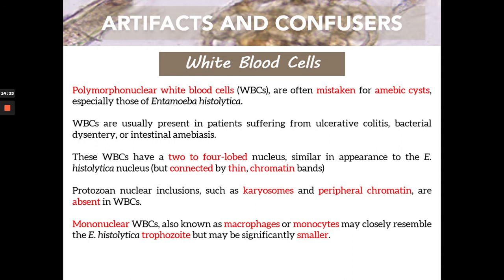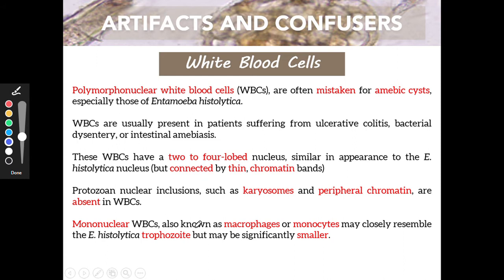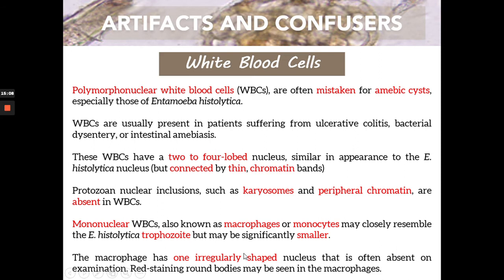Your mononuclear WBCs — usually referring to macrophages or monocytes — may resemble Entamoeba histolytica trophozoites. They may be smaller in size compared to trophozoites. The macrophage has one irregularly shaped nucleus, and there are some red-staining round bodies that can be seen in macrophages that are absent in trophozoites. These are some defining features for differentiating WBCs from amoebic cysts or trophozoites.